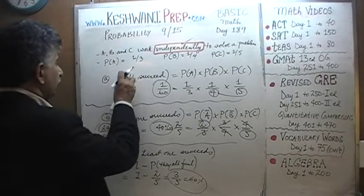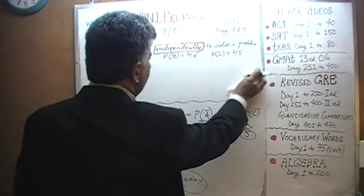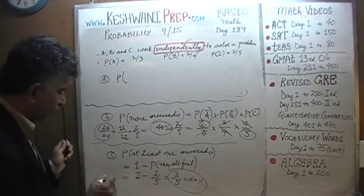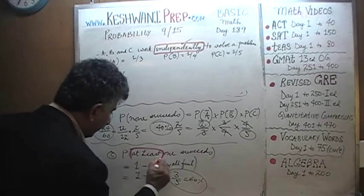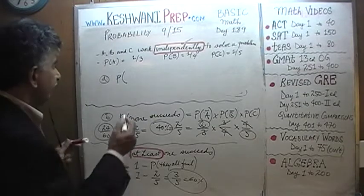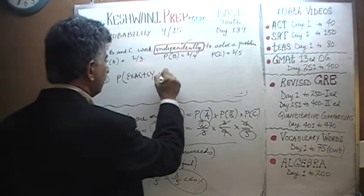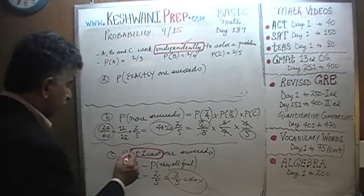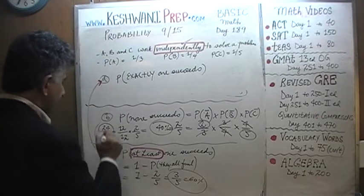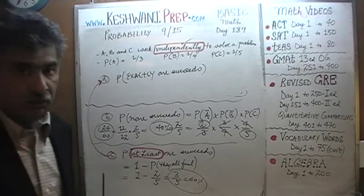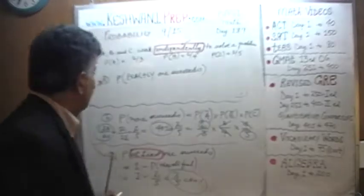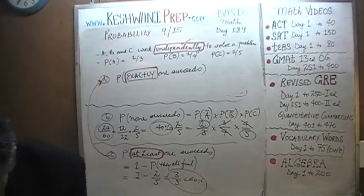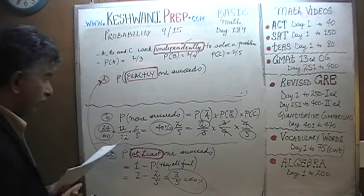Now we get into a more involved scenario — Part D. Pay attention to the language: we are not talking about at least one succeeding. Now we're talking about a situation where exactly one person succeeds. Compare this to Part C carefully. In Part C we used one minus the odds they all fail. For exactly one succeeding, we need a different approach.